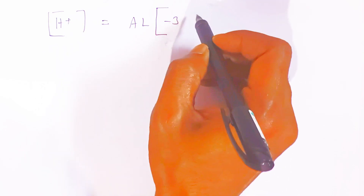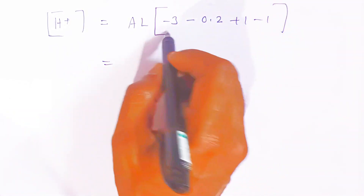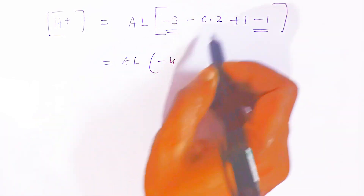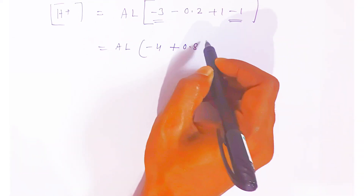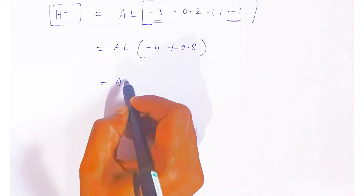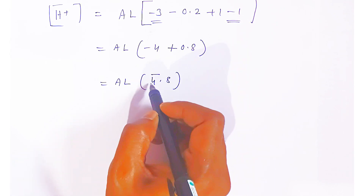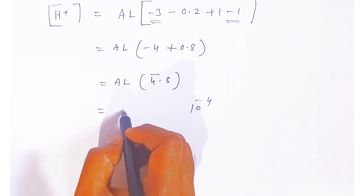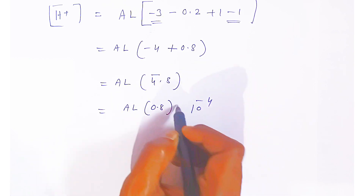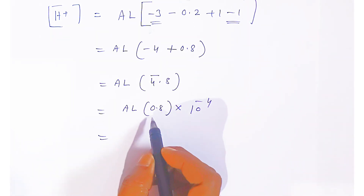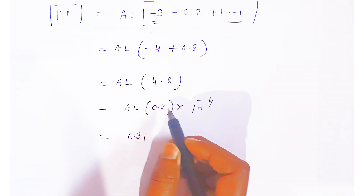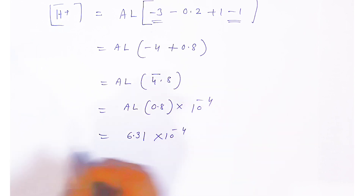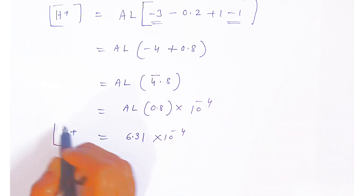Continuing the antilog calculation: −3 − 0.2 + 1 − 1 gives us the characteristic as −4 and the mantissa as 0.8 (since 1 − 0.2 = 0.8). The antilog of 0.8 is 6.31. So the concentration of H⁺ = 6.31 × 10⁻⁴ mol/L.